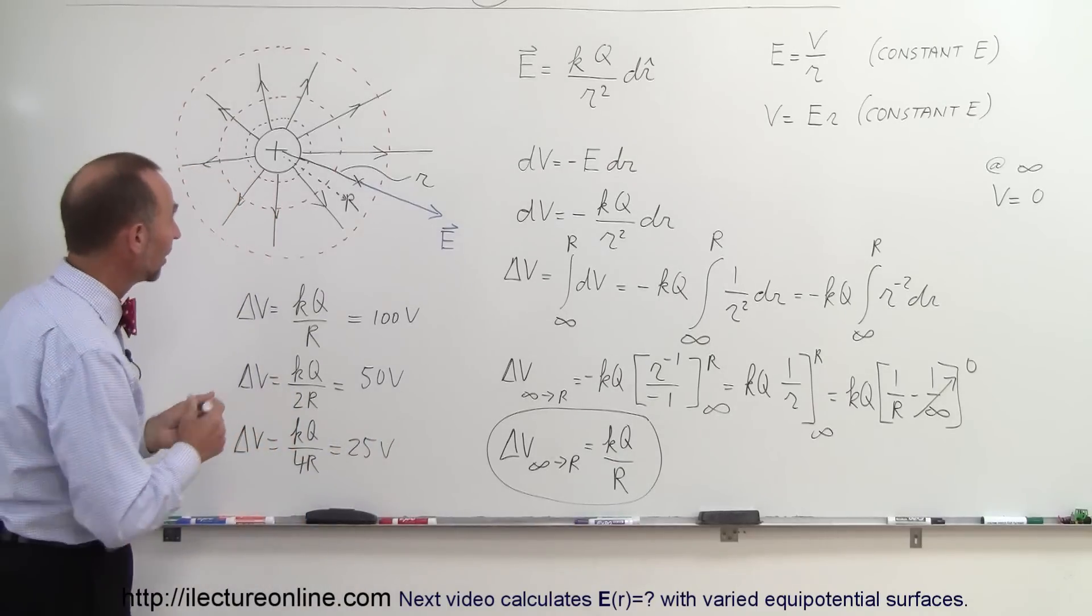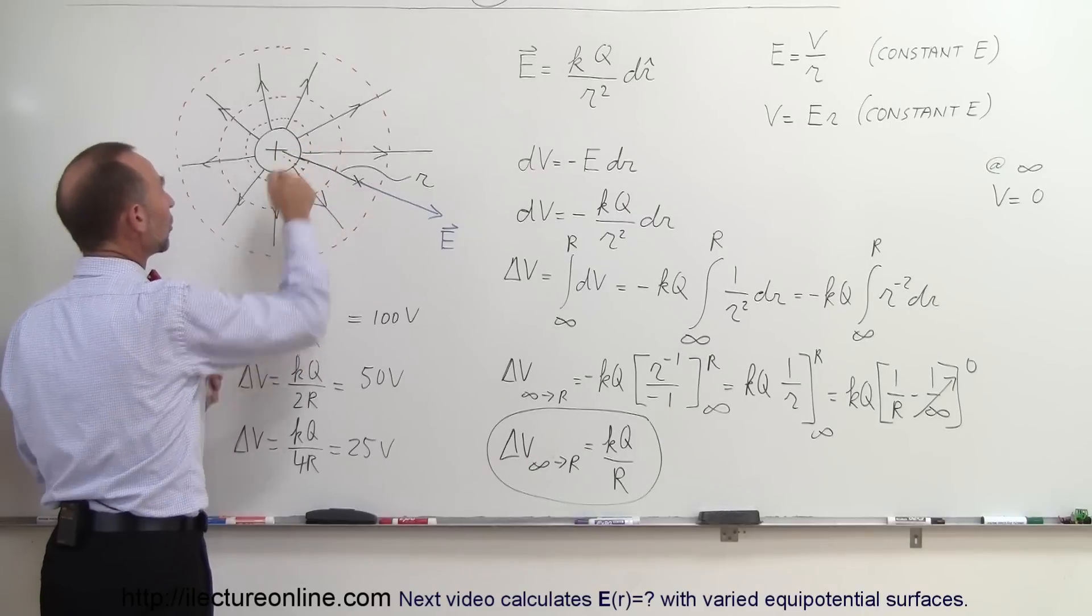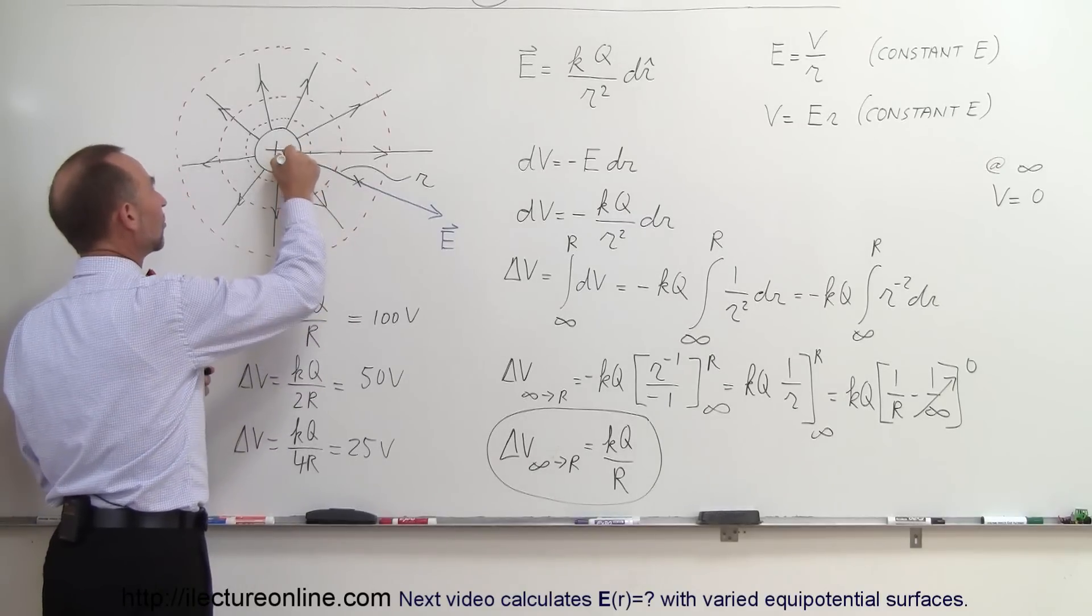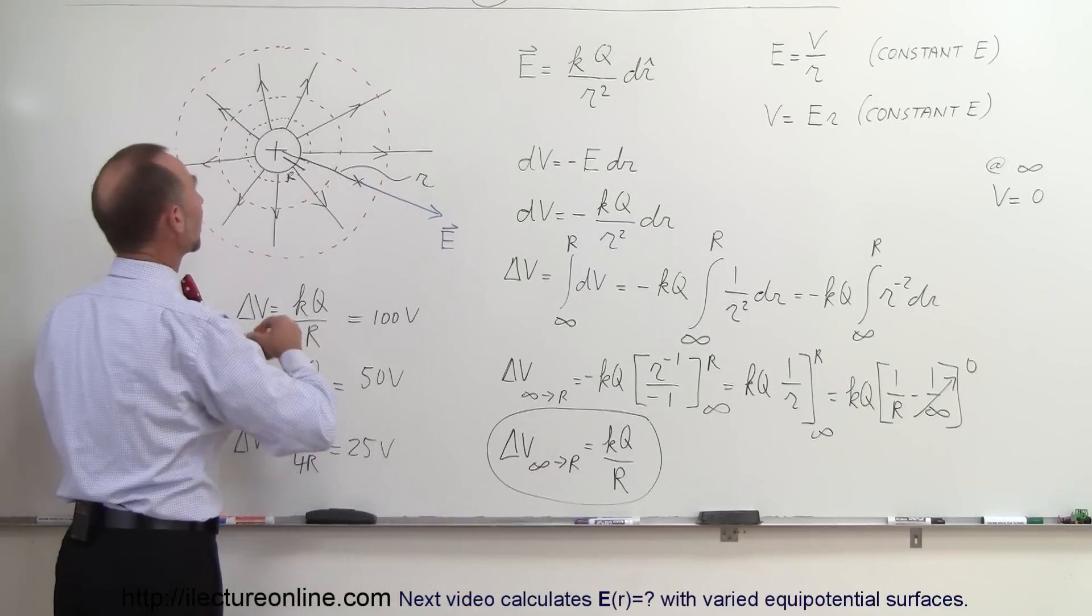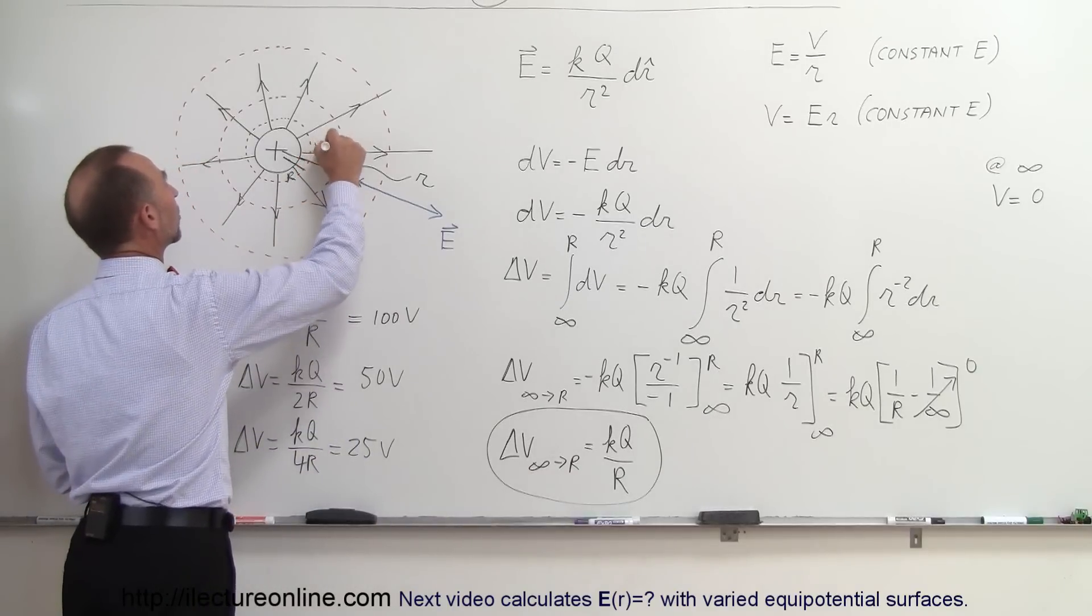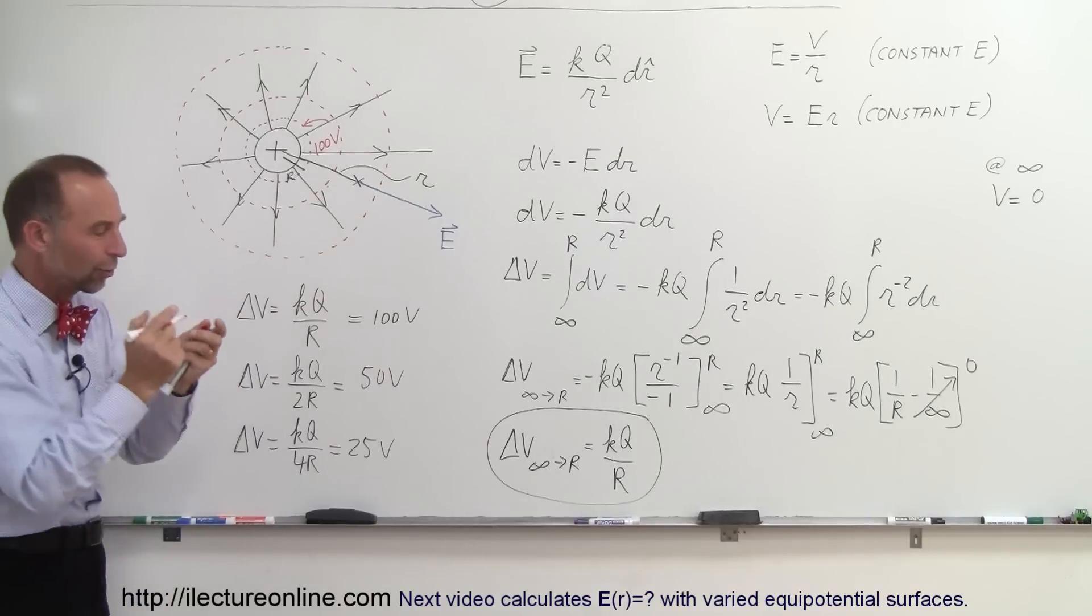Here we have a good example. Let's say that we go to the first circle right here. This distance here represents R, and then that means that this circle will represent an equipotential voltage of 100 volts for this circle, or for this spherical shell.